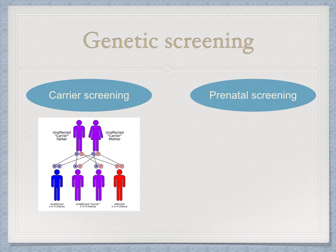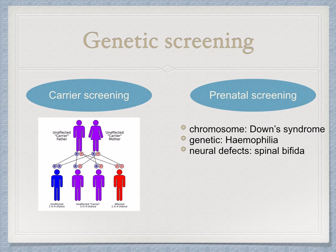There are different types of genetic screening: carrier screening and prenatal screening. Carrier screening involves families, individuals, and potential parents. Prenatal screening checks for chromosome abnormalities such as Down syndrome, genetic disorders such as hemophilia, and it can also check for neural defects, for example, spina bifida.